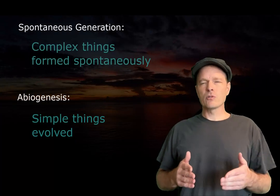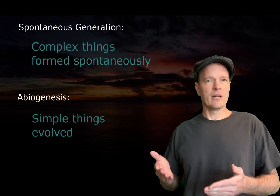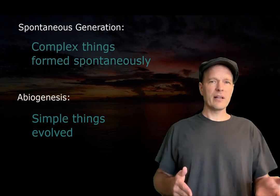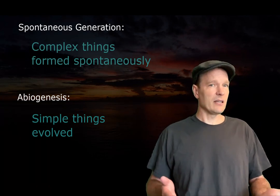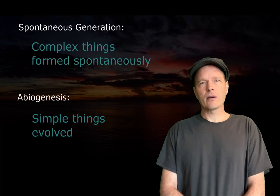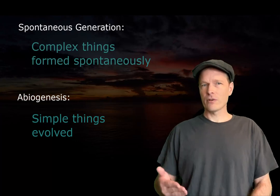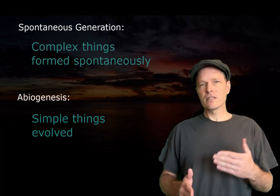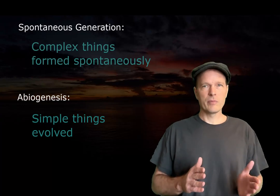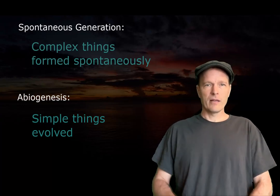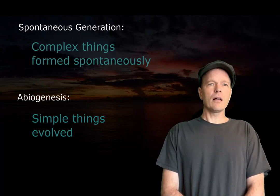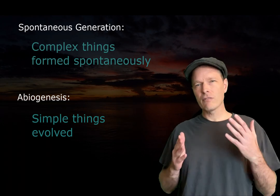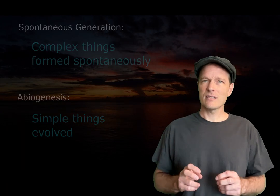But there is a significant difference between spontaneous generation and abiogenesis. Spontaneous generation was proposed before the theory of evolution — it suggests that something complex formed spontaneously. By contrast, abiogenesis was proposed after the theory of evolution. It suggests that something very simple began evolving. In other words, evolution was happening long before anything sophisticated enough to be called alive even existed.